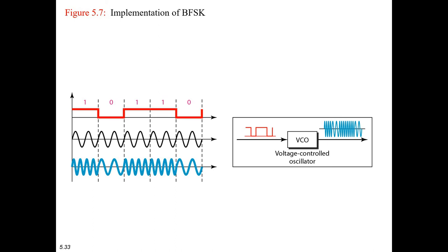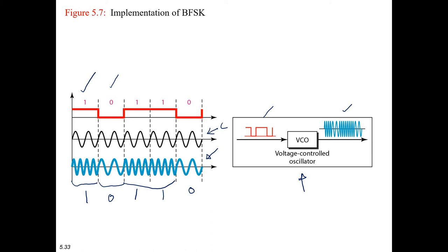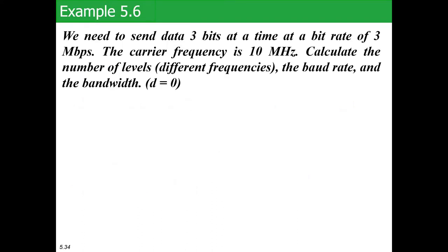Binary one is represented by a high square voltage and zero is represented by a low square voltage. We have a carrier frequency in the middle. In the modulated frequency, whenever the voltage is high — that is, the bit equals one — the frequency changes. Whenever the bit is zero, the frequency also changes. All high frequencies represent one and low frequencies represent zero. This binary signal is converted to an analog signal using a voltage-controlled oscillator.